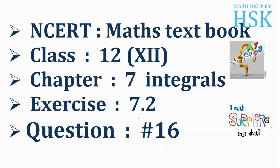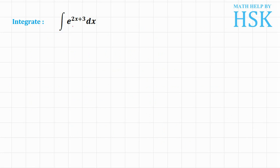Question number 16, Exercise 7.2, Chapter 7. In this question we have to integrate e to the power of 2x plus 3. It is a very easy question and all we have to do is substitute 2x plus 3 equal to t.